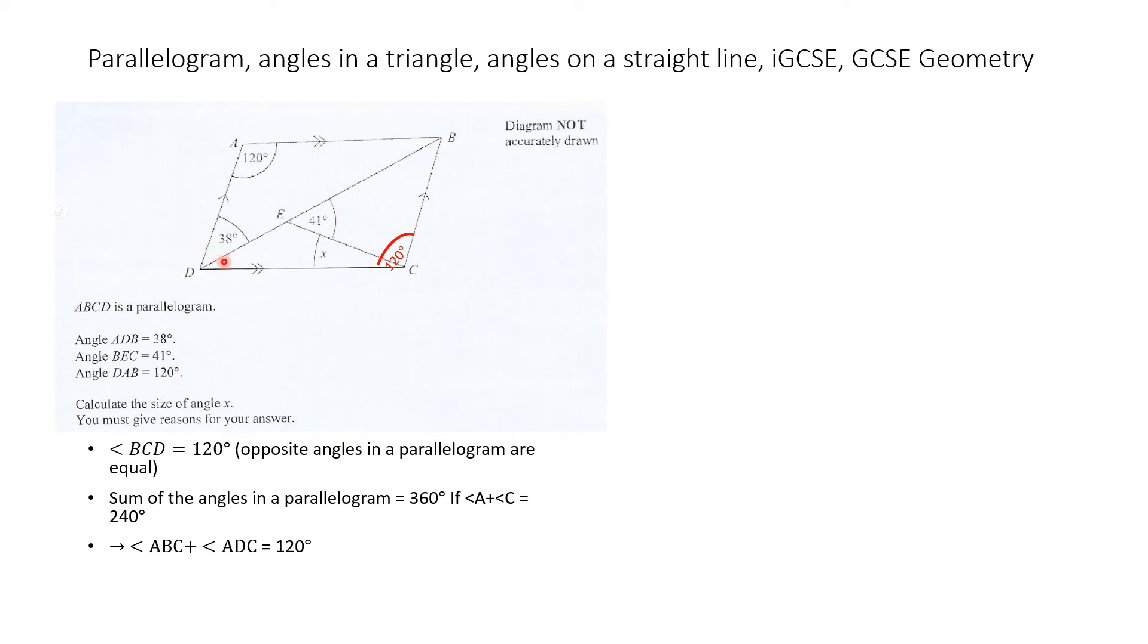So angle D and angle B add up to 120 degrees. Because these are opposite angles of a parallelogram, if you divide 120 by 2 you get 60. So the angle at B and the angle at D will each be 60 degrees.